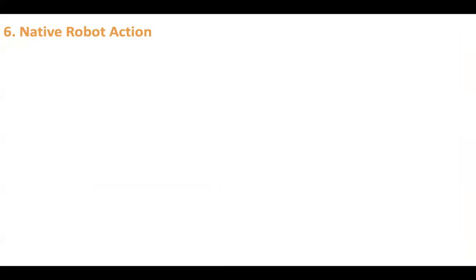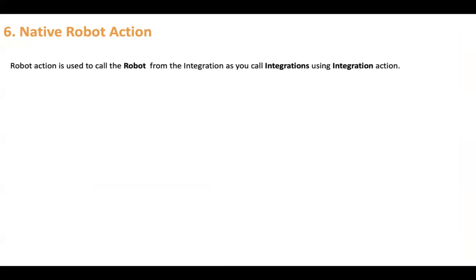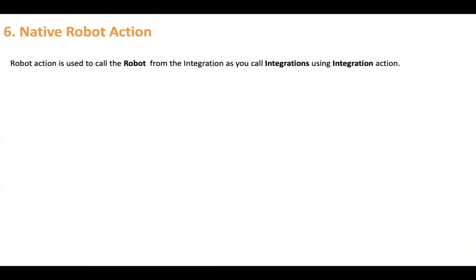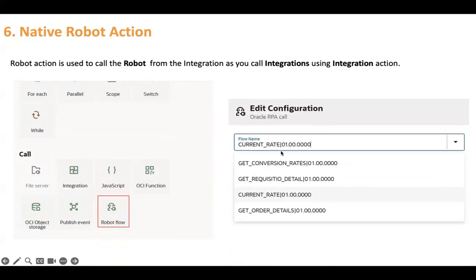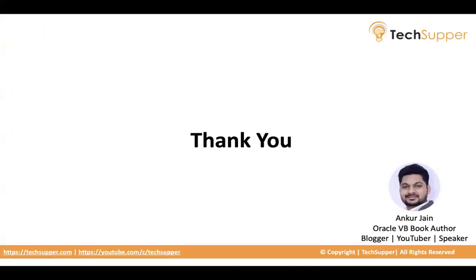Next is native robot actions. After your robot is completed and tested, you can run robots via integration. Robot action is used to call the robot from an integration, just as you call an integration using an integration action. This action was natively developed and is available in the integration action palette. Once your robot is activated, you can call those robots from integration using the robot flow action. When you select it, it will ask which robot you want to run and give you all the activated robots. Those are the terminologies you need to be familiar with when working with RPA.